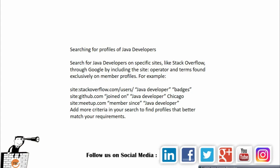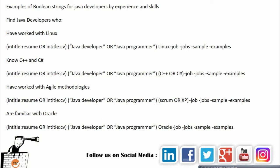You can also use search strings specifically for finding people on Stack Overflow and GitHub. As you can see, you reference site:stackoverflow.com/users, define java developer, and specify badges. You can also use site:github.com for people who have joined GitHub with a Java developer title in a specific city like Chicago. You can do this on Meetup too — any site with public profile membership can be used this way.